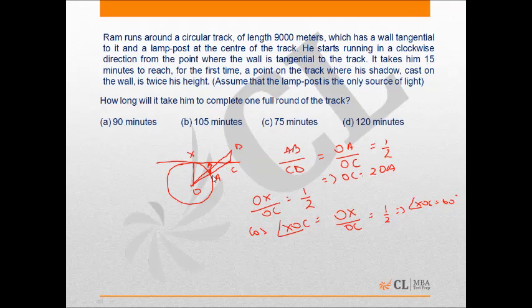Thus when Ram reaches point A, he has covered 60 degrees of the potential 360 degrees needed to complete one round. That is, he has already covered one-sixth of the entire length of the track.